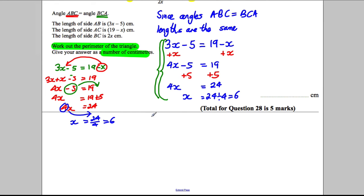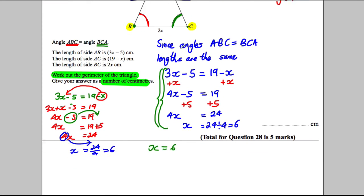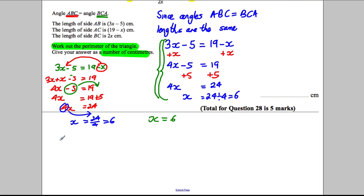We know that x is 6 and we've got the three sides. The three sides are 3x subtract 5, 19 subtract x and 2x. So we need to substitute 6 in for x in each of these and work out the three sides. So if 6 went in here, we would have 19 subtract 6, which is equal to 13 centimeters. If 6 went in here, it would be 2 multiplied by 6, which would be 12 centimeters. And if 6 went in here, it would be 3 multiplied by 6, subtract 5, which is 18 subtract 5, which is 13 centimeters.